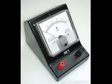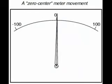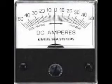The meter movement will have connection terminals for current to enter and exit. Most meter movements are polarity sensitive, one direction of current driving the needle to the right and the other driving it to the left.